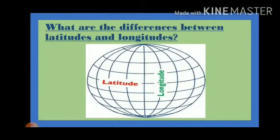So if I ask you, what are the differences between longitudes and latitudes? Latitudes run in an east to west direction, while longitudes run in a north to south direction. Latitudes are parallel to each other, but longitudes are not parallel — they meet at the poles. The total number of latitudes is 181, but in the case of longitudes, the total number is 360. These are the differences between latitudes and longitudes.